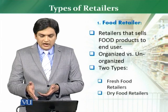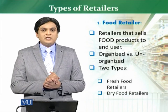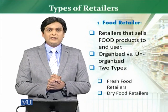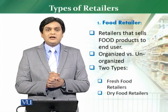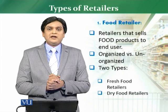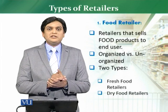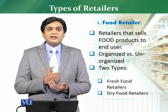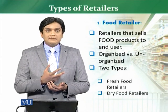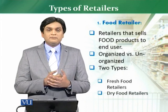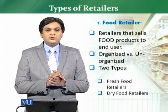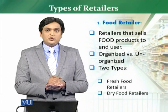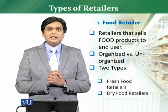We have two types for food retailer. The first type is the Fresh Food Retailer — a person who is selling fresh products to consumers. If a person is selling meat, fruits, vegetables, dairy products, bakery products, or fish to the end consumer, these are all fresh food products. The person selling these products to the end consumer is called a fresh food retailer.